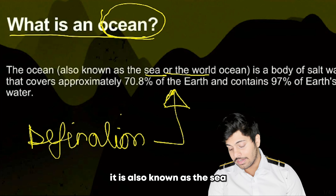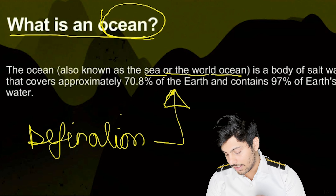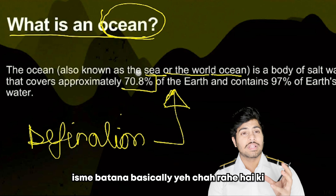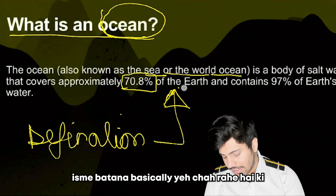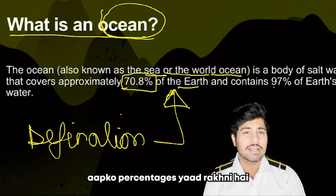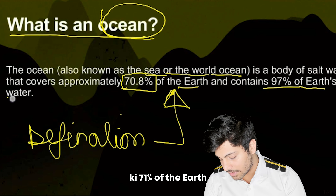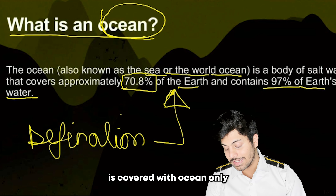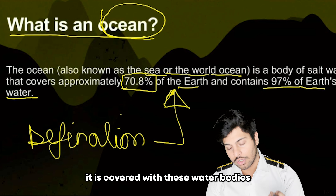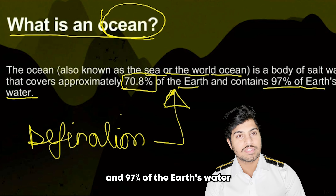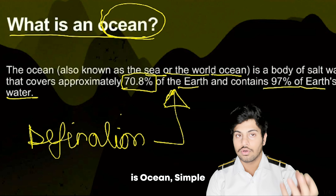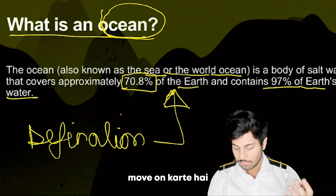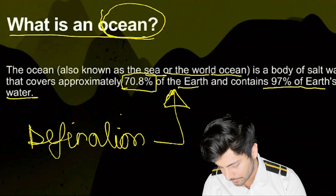It is also known as the sea. You have to remember the percentages: 71% of the Earth is covered with Oceans only — covered with these water bodies. And 97% of Earth's water is Oceans. Simple.